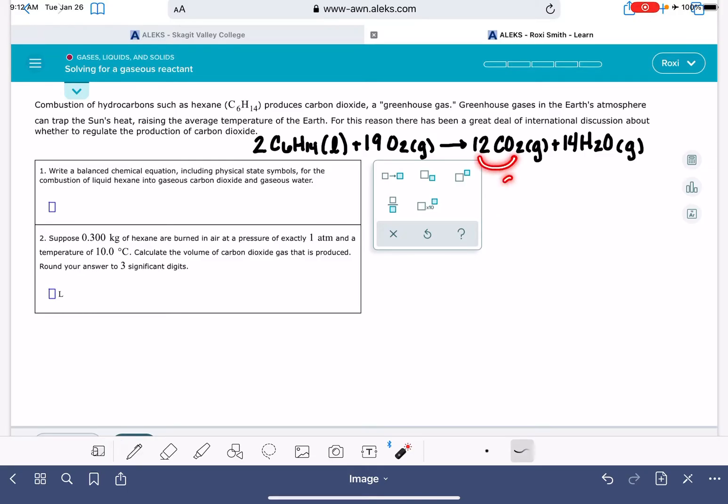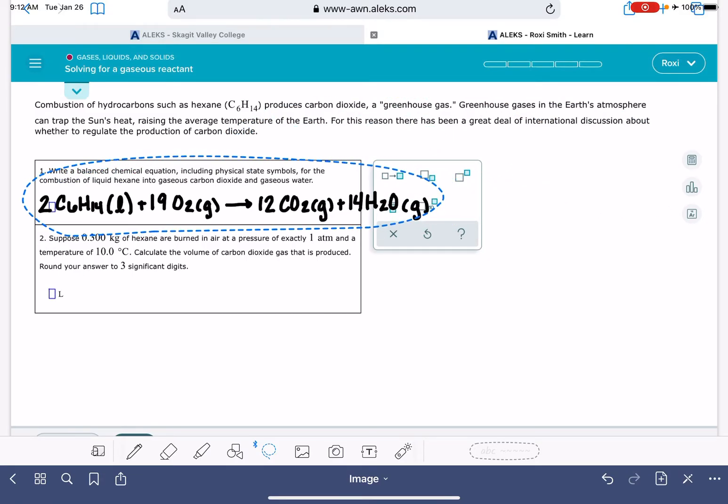I'm just going to double check that because it's kind of early in the morning for me. 38 divided by 2 is 19. So here is our balanced equation, and this is going to be the answer to this first part of the problem.